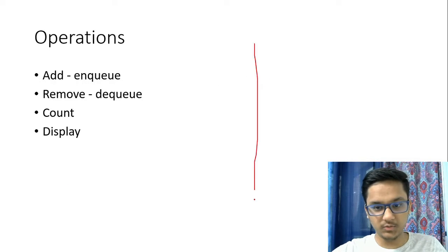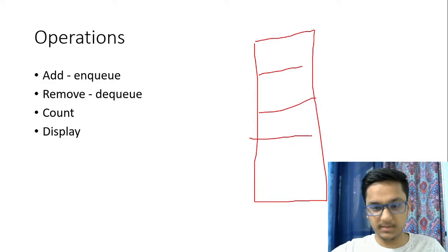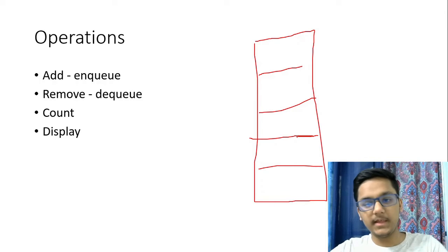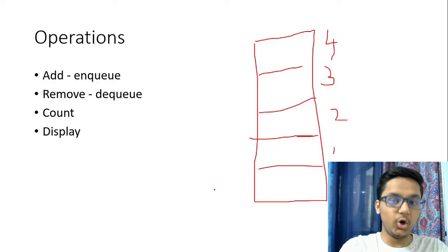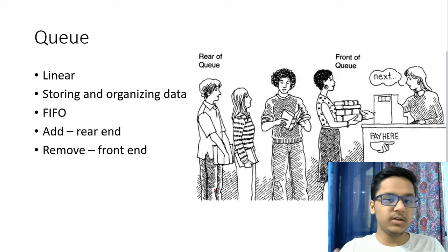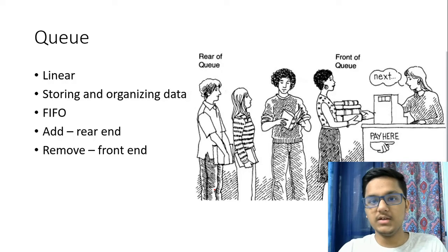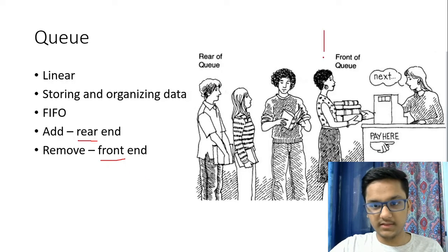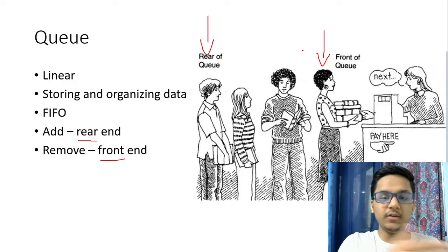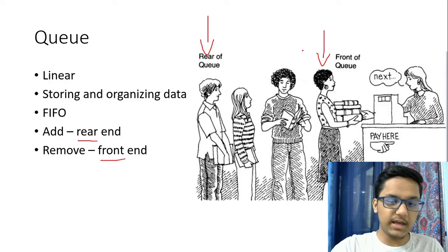I'll draw a queue. Just like a stack, a queue looks exactly the same as a stack. One difference already mentioned is last in first out versus first in first out. In a stack, we have a top variable which points to the zeroth index, and you only use that top pointer to access, remove, and add elements. But in a queue, we have two pointers instead of one. One pointer is called rear and one pointer is called front. The front pointer is at the front of the queue and the rear pointer is at the rear.